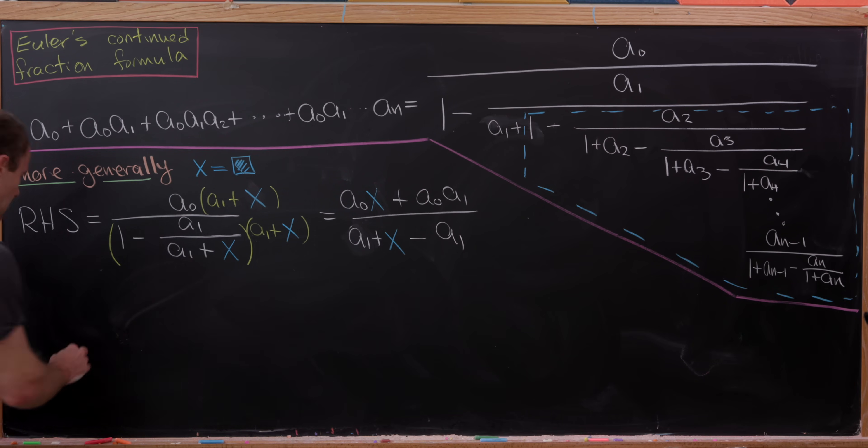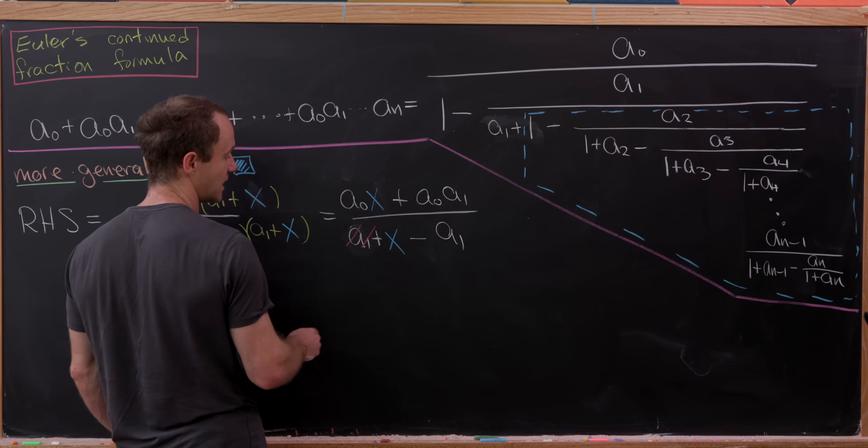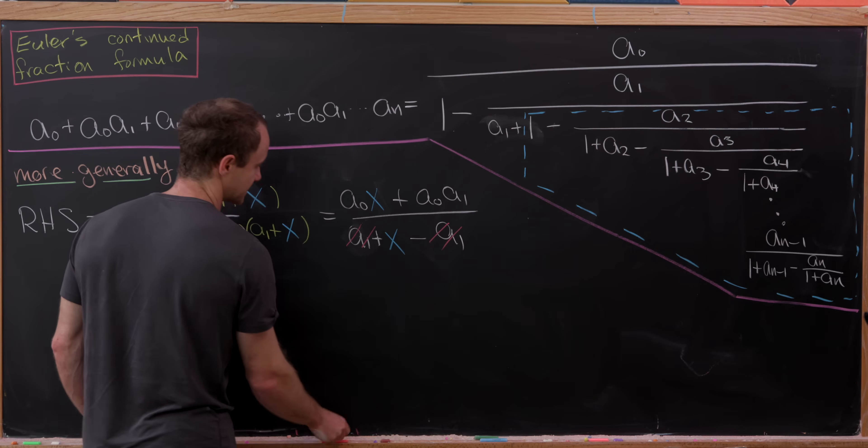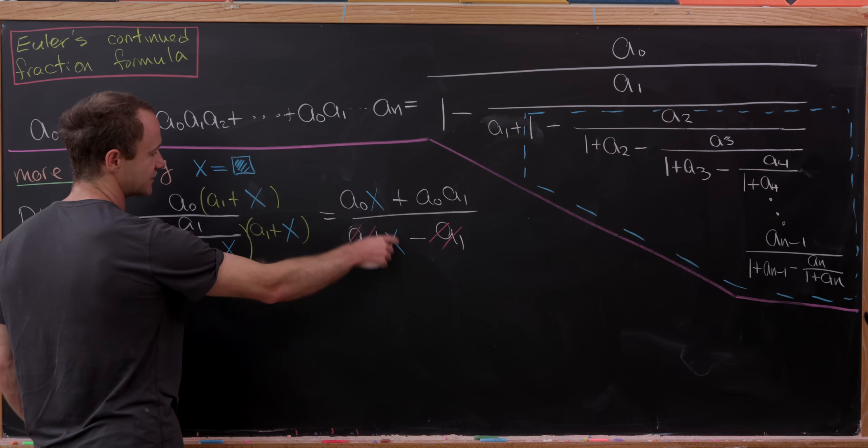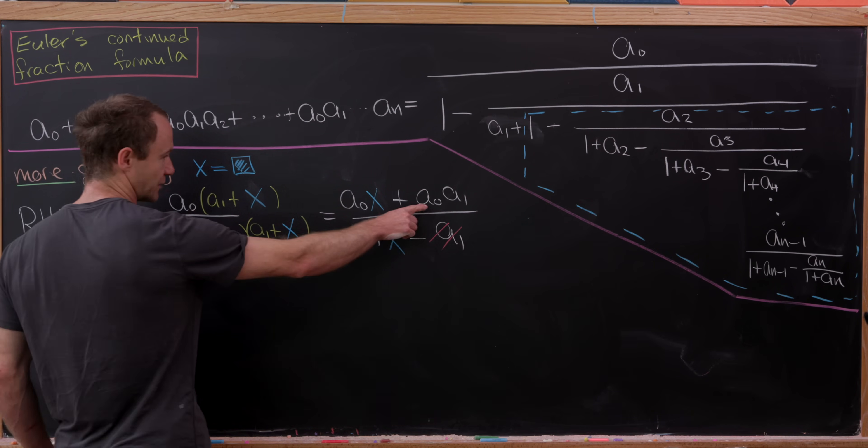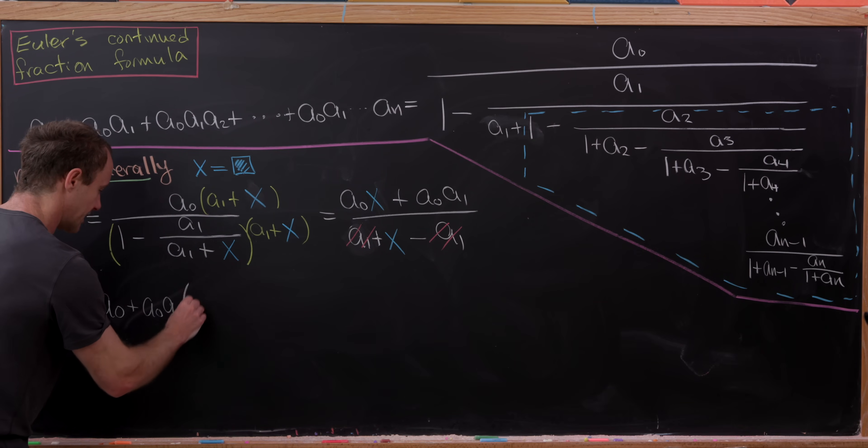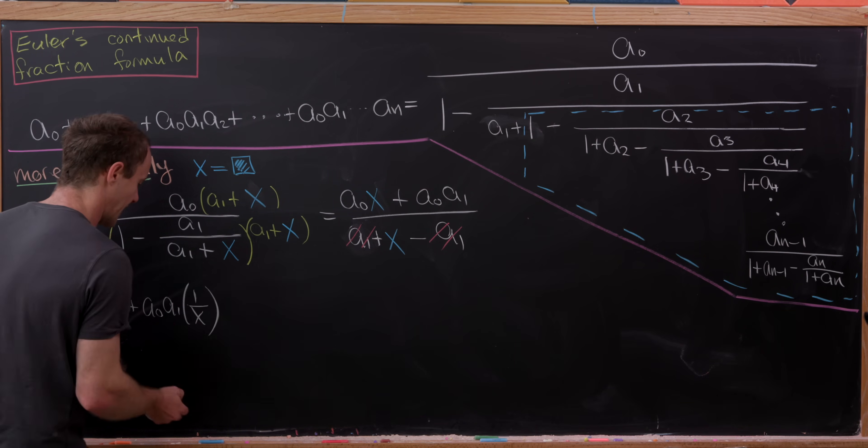But now let's see how that simplifies. You can probably see that it'll simplify nicely. We've got this a1 and this a1 will cancel. And then we'll be left with a0 times x over x. So that's simply a0. And then next we'll be left with a0 times a1 over x. Well, I'm going to write that as plus a0 times a1 times one over x.